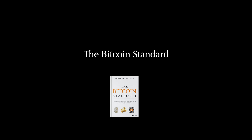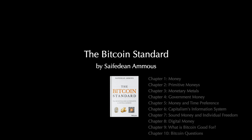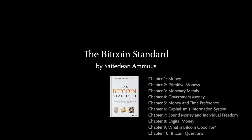This video is the first in a 10-part series on the Bitcoin Standard, a book by economist Saifedean Ammous. If you had to read only one book about Bitcoin and Austrian economics, this is the one to read. You can find a link to purchase the book in the description of this video. This series includes 10 videos, one for each chapter of the book, and this video focuses on the information contained within Chapter 1.